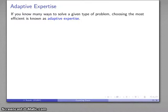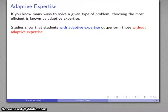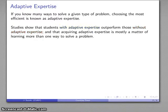And this again ties back to this notion of adaptive expertise. If you know many ways of solving a problem, choosing the best and most efficient method is known as adaptive expertise. And educational studies have shown time and again that students who possess adaptive expertise generally outperform those without, and that acquiring adaptive expertise is mostly a matter of learning more than one way to solve a problem.